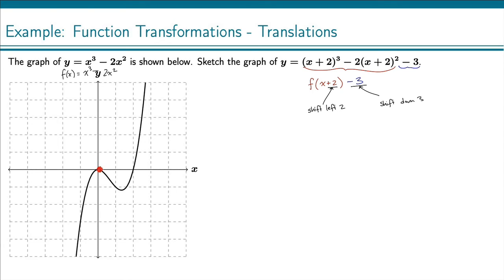So I'm going to take this key point right here, this local maximum, and shift left 2 units. That puts me right here. And then we go down 3 units. So down 1, 2, 3. And that puts me right here.